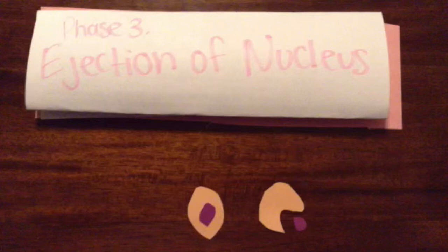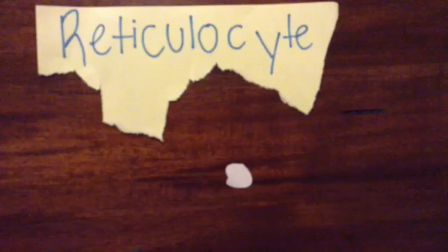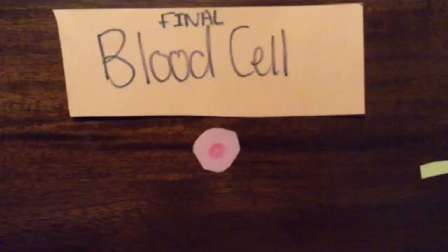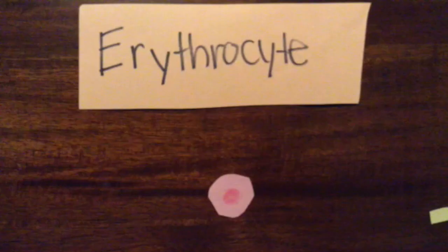Phase 3 is the late erythroblast stage. During this stage, the nucleus is ejected from the cell. After that, they become reticulocytes — these cells have a net-like appearance, and after one to two days they mature into a mature erythrocyte. At this final stage, there is a loss of ribosomes, and these cells finally enter circulation.